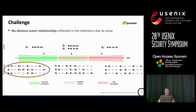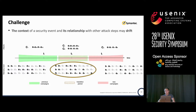To make things even worse, there are two challenges. The first is that we don't have obvious event relationships when looking at the telemetry data. And the context of a security event and its relationship may drift. At a certain time, two different attack branches may be used together, and there is a transition period where attackers are looking for how to use an exploit more effectively and efficiently, which makes the telemetry tree confusing.